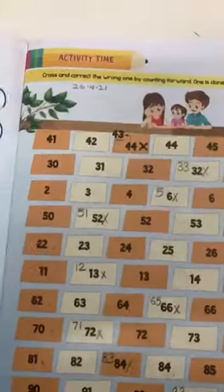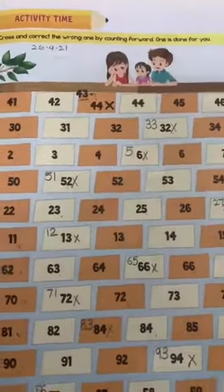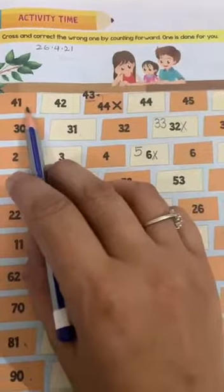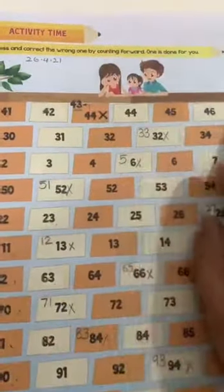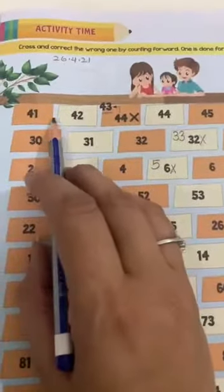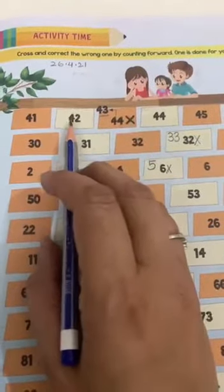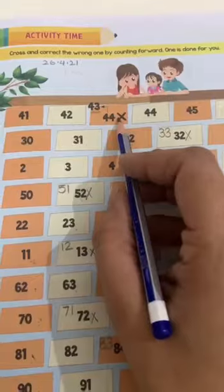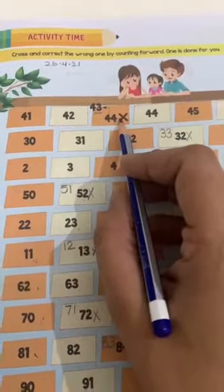On page number 5, it is activity time. Just look at the numbers written here. Cross and correct the wrong number by counting forward.